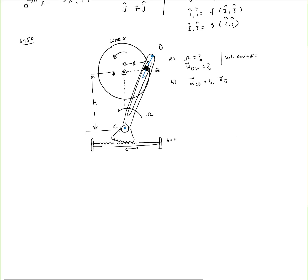First, we need to determine whether we need a translating or rotating reference frame. Following the procedure from module 7, the test is: can you identify a rigid body with something sliding inside it while it's rotating? In this case, pin B is sliding inside rod CD, and rod CD is rotating with some angular velocity. So this is a good example of where you should use a rotating reference frame.